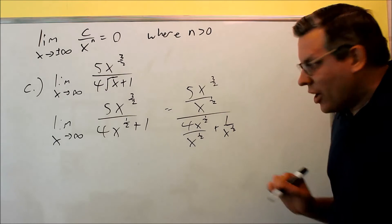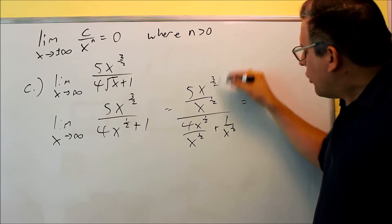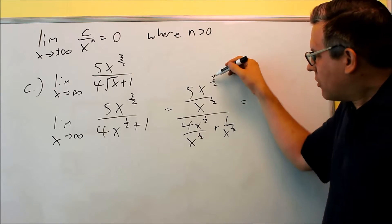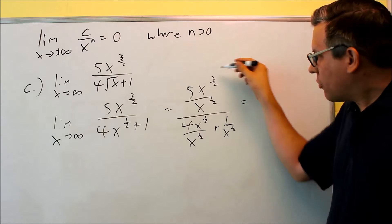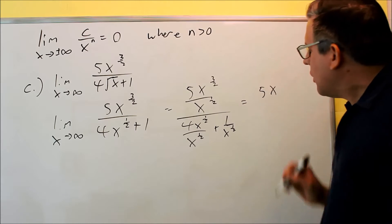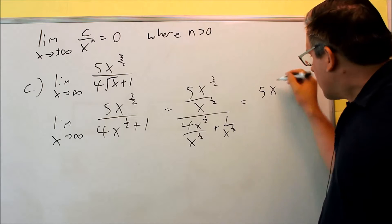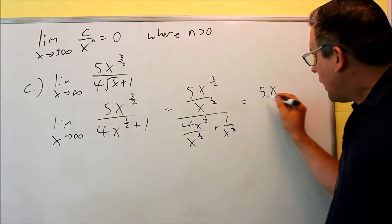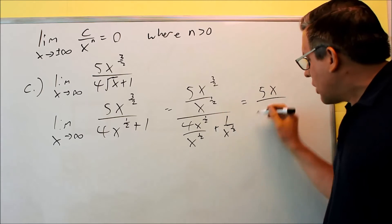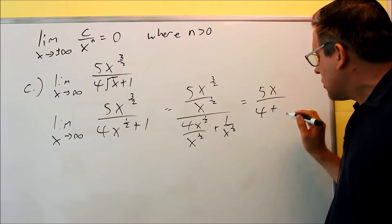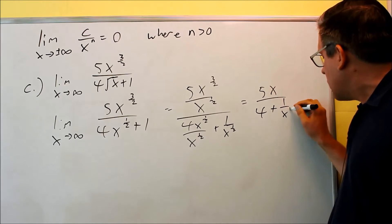Then we're going to do some simplifying. We have to subtract powers here, so top power minus the bottom power. 3 halves minus 1 half is going to be 2 halves, or just x to the first power. On the bottom, halves cancel, I get 4 plus 1 over x to the 1 half.